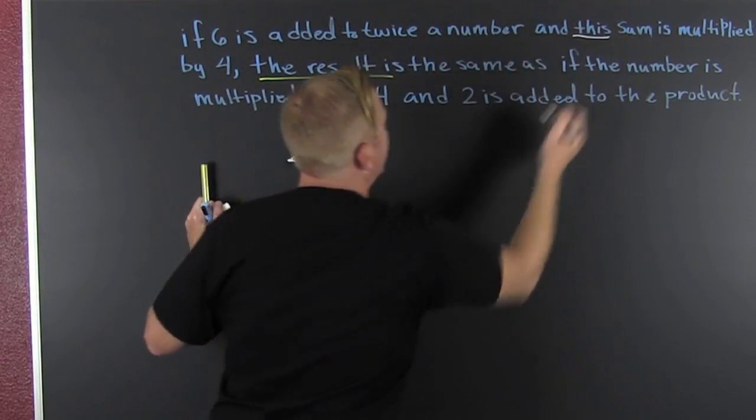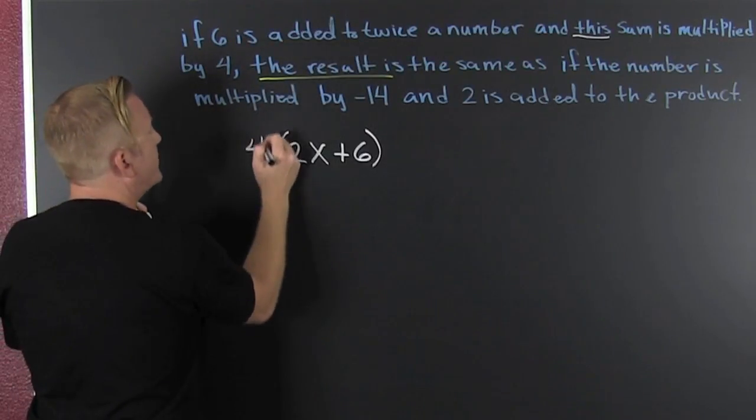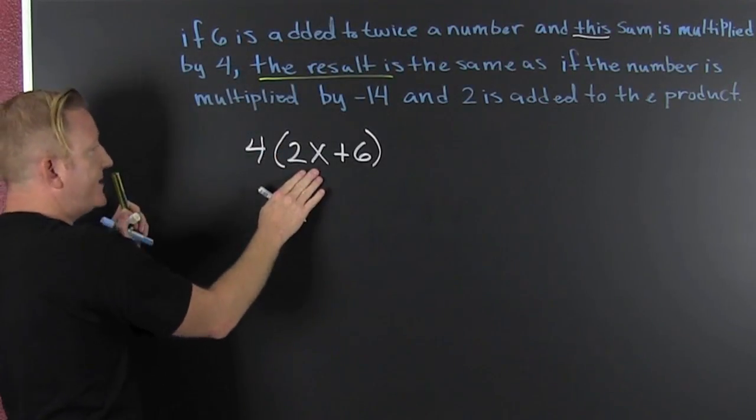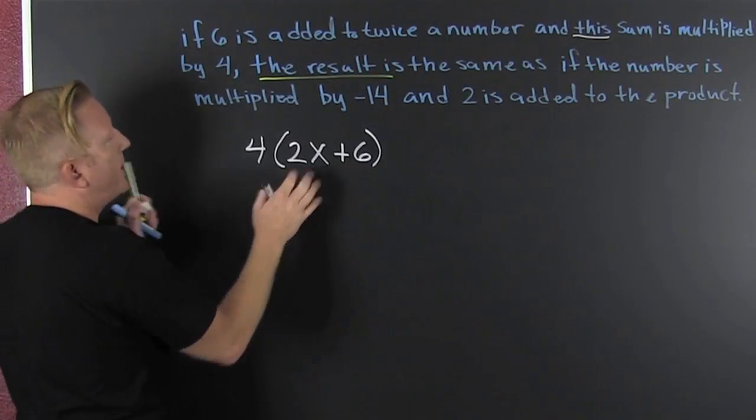That sum, and they're really clear with this, that sum is multiplied by four. Sure. So that looks like six is added to twice a number and that sum is multiplied by four.